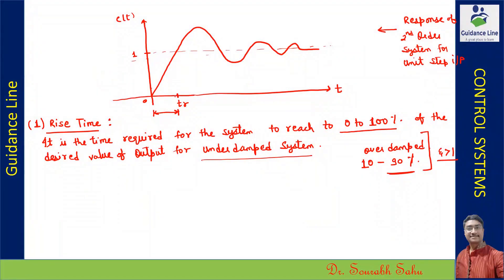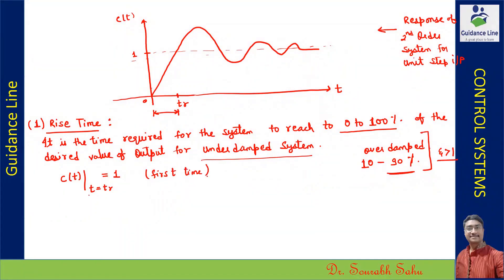If we find this expression, we can understand that when the system response is 100%, the value of c(t) becomes 1. So for time t equals to t_r, the value of c(t) becomes equal to 1 for the very first time. c(t) is basically 1 minus e to the power minus zeta omega_n t.